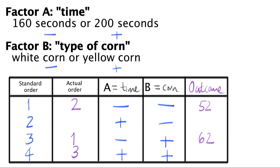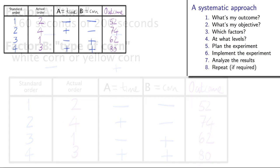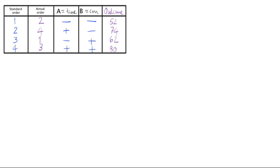I then go get another random number and suppose I get row 4 from the standard order table. When I run that experiment, I get a value of 80 popped corns. My final experiment is number 2 from the standard order table, with long cooking times and with white corn. This led to a result of 74 popped corns. So once all the experiments are done, we will have 4 entries of outcome values. Now where do we start with our analysis?